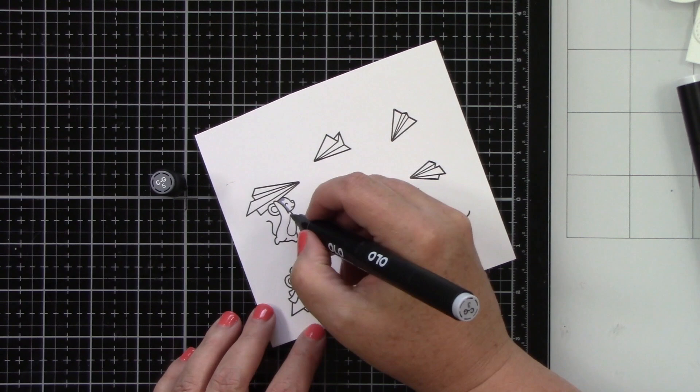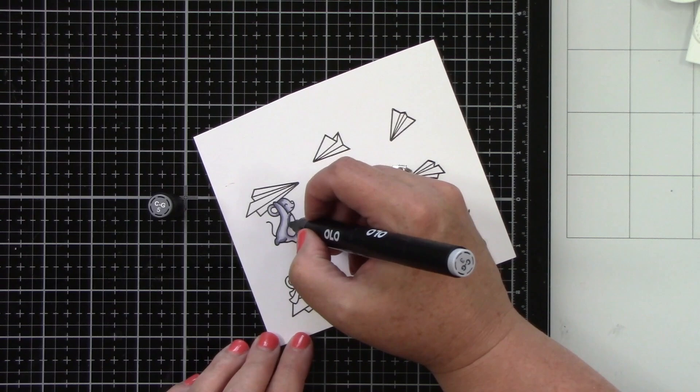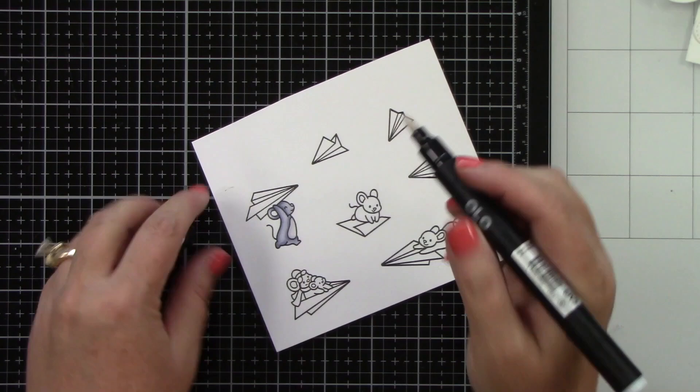So I stamped my images from that stamp set on white cardstock and I am going to be using Ollo markers to color my images today. If you want to look at the caps you'll definitely know what colors I'm using, but I'll give you a quick rundown of the colors.